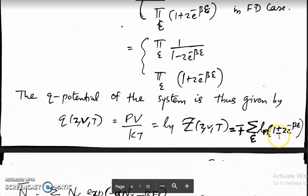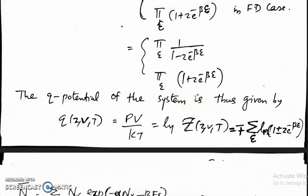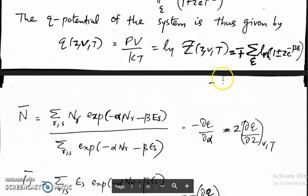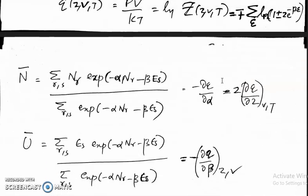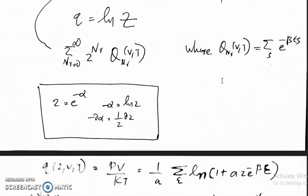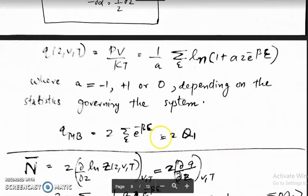There is a small error here. The minus sign should come up and plus should go down — minus for the Bose-Einstein case and plus for the Fermi-Dirac case. Now, we are including the Maxwell-Boltzmann case also, and all three are combined into a single equation.